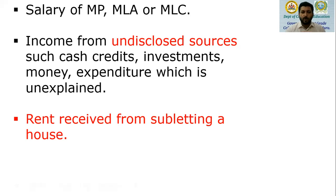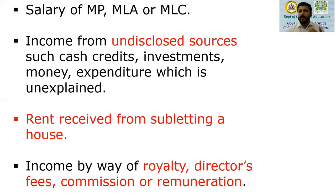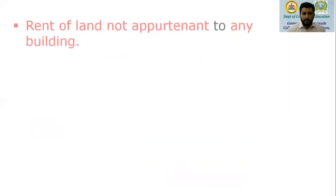Then, income by way of royalty, director's fees, commission, or remuneration. If an assessee is receiving royalty income — maybe for writing a book, royalty received from a publisher — or if directors in a company are receiving their fees, or if there is any commission such as insurance commission or any remuneration, that will be taxable under the head other sources.